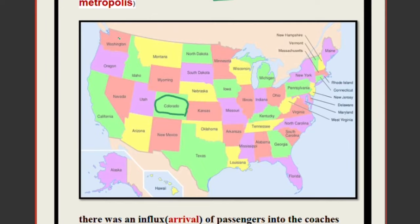We will be talking about three places: Washington, Denver in Colorado, and Kansas. The whole story takes place on a train which has started its journey towards the east. The train stops at Denver, people get inside, and then the whole story takes place on this eastbound train.